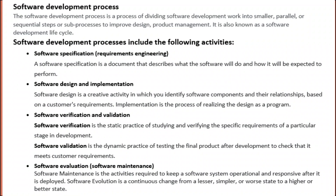The software development process is a process of dividing software development work into smaller parallel or sequential steps or sub-processes to improve design and product management. It is also known as a software development life cycle. Software development processes include the following activities: software specification and requirements engineering.